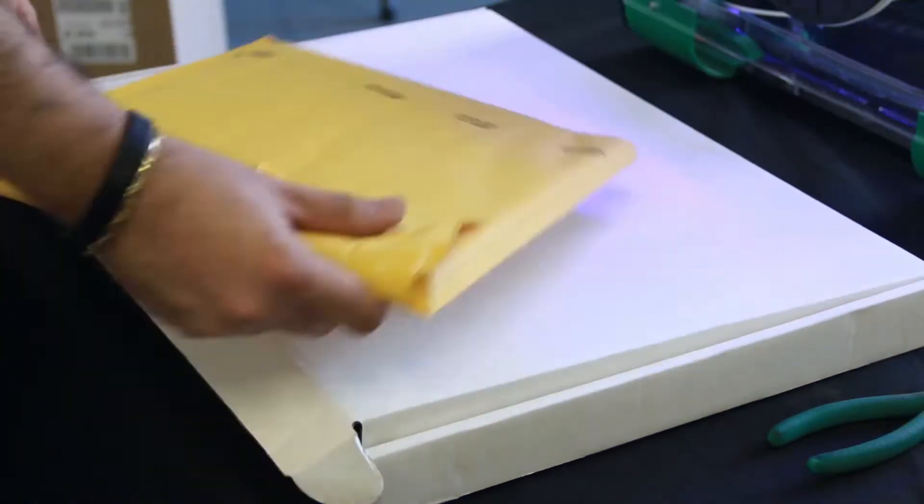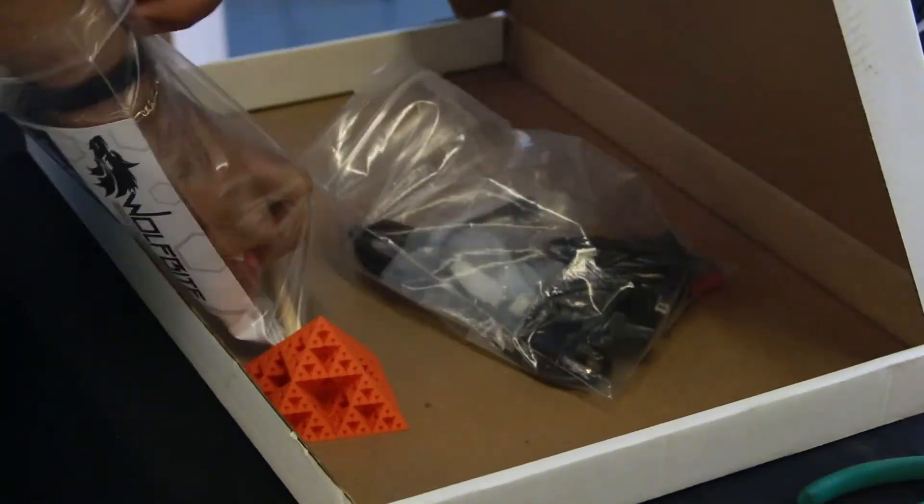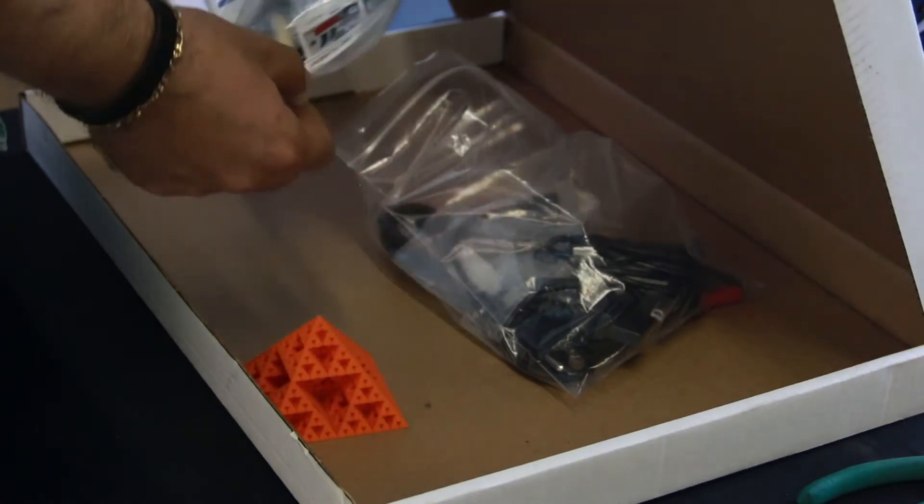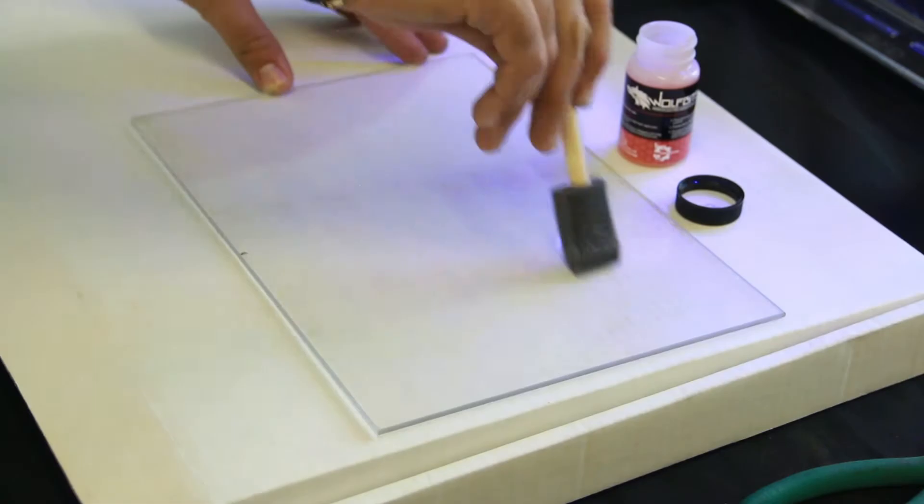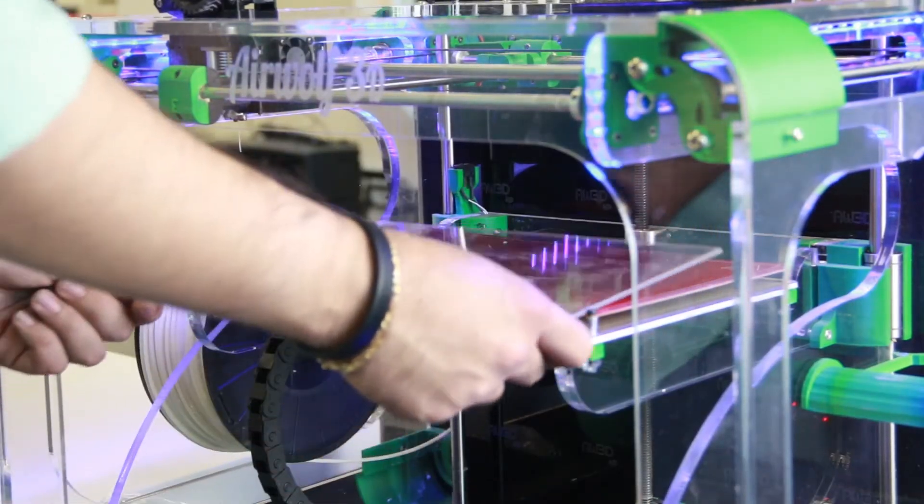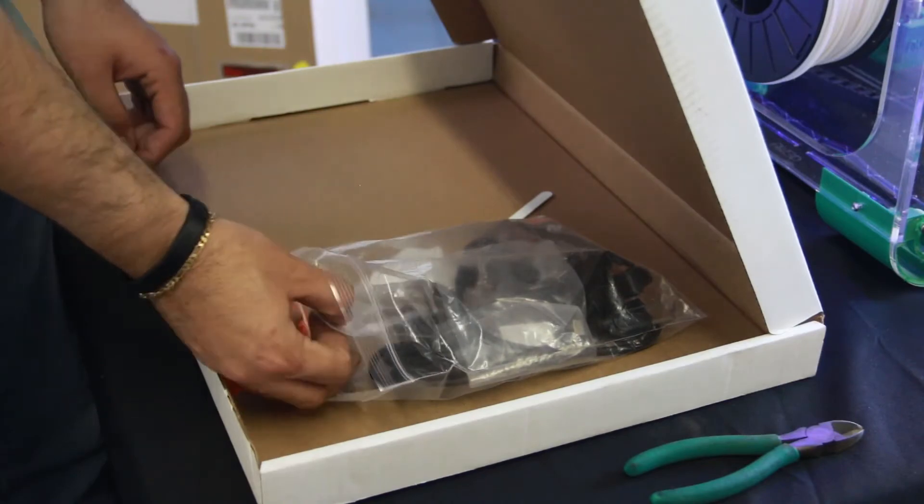Remove the glass from the accessory box and prepare it by applying the included WolfBite bed adhesion solution. Cover the entire glass with a coat of WolfBite. Place the glass on top of the heat bed and secure it using the four clips included in the accessory box.